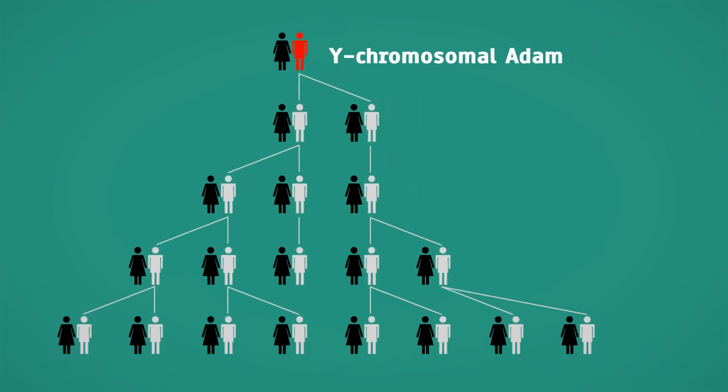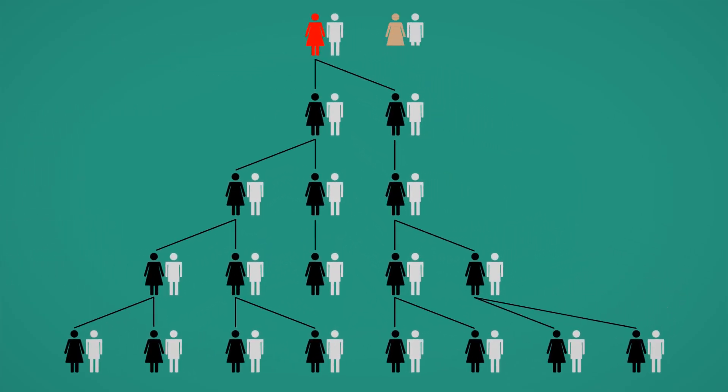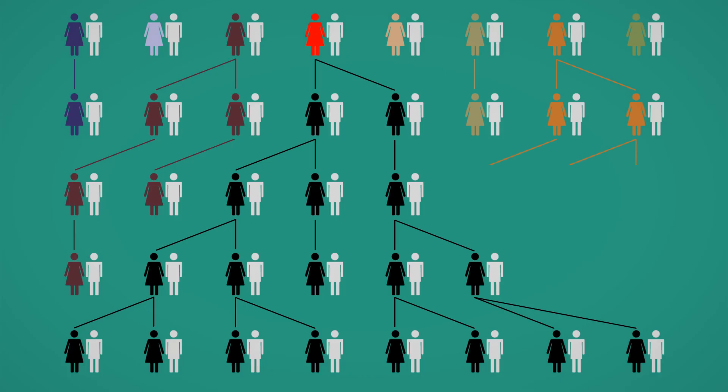However, there is no reason to believe that mitochondrial Eve and Y-chromosomal Adam lived at the same time. Likewise, they were not the only humans living at the time, but their contemporaries failed to produce a direct matrilineal or patrilineal descent.